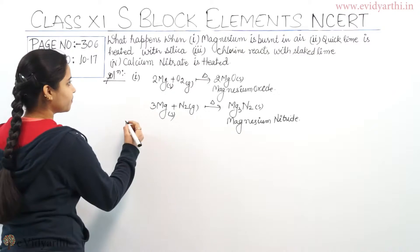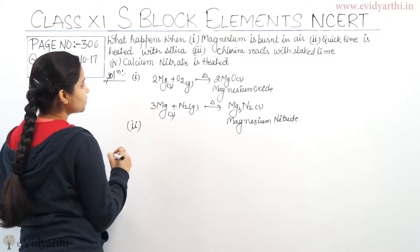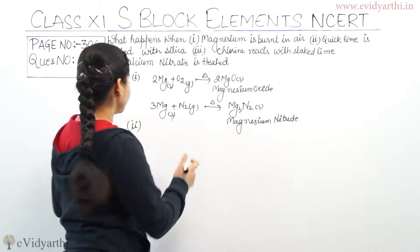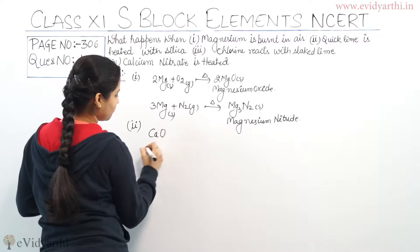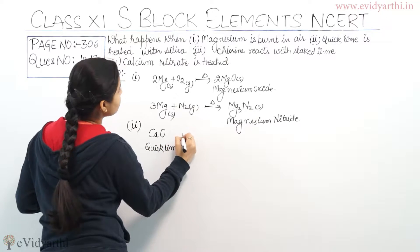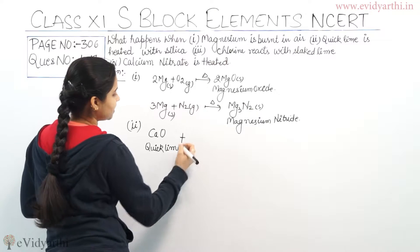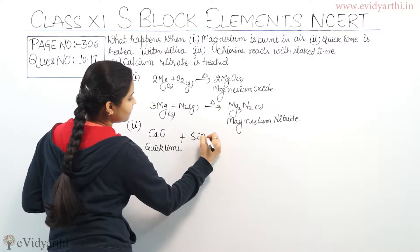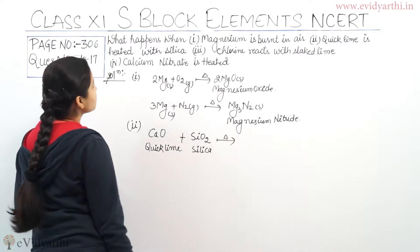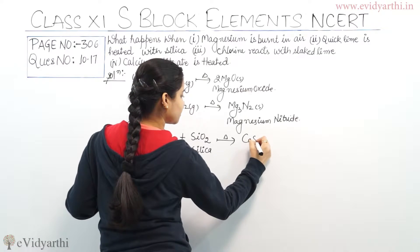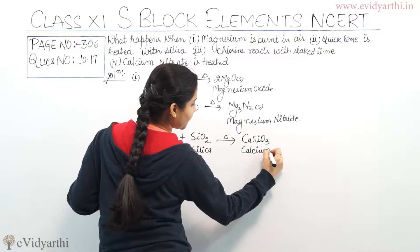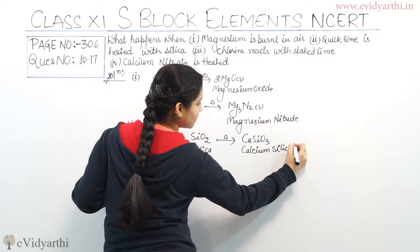Coming to the second part of this question: quick lime is heated with silica. What is quick lime? Quick lime is calcium oxide, CaO. We have heated this quick lime with silica, whose formula is SiO2. When we heat it, what we get is calcium silicate, CaSiO3.